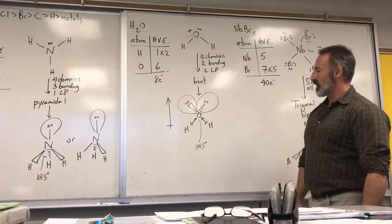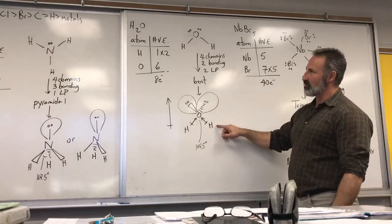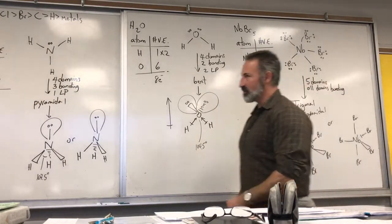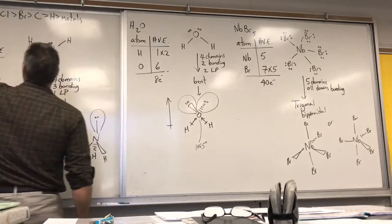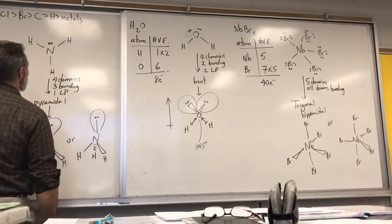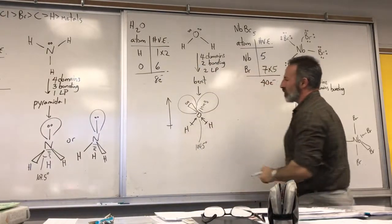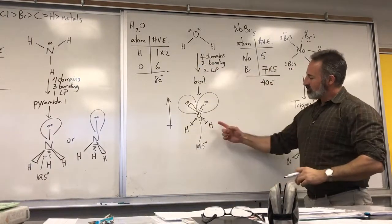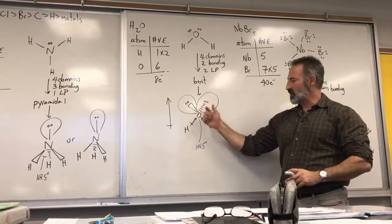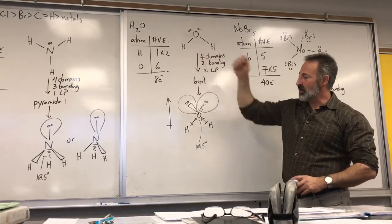Water also has polar bonds. The oxygen atom is quite a lot more electronegative than hydrogen — it appears way up on the electronegativity scale, right next to fluorine; only fluorine is more electronegative than oxygen. So the dipole for each hydrogen is pointing towards oxygen, and the resultant for the whole molecule is pointing upwards.